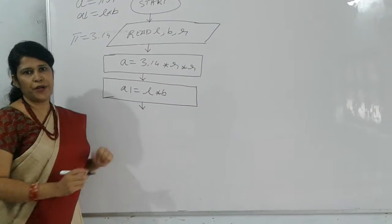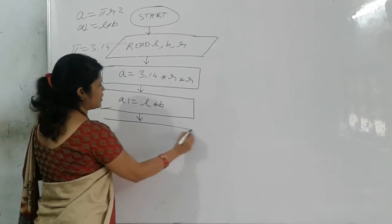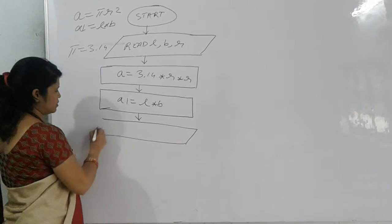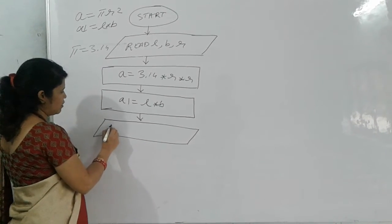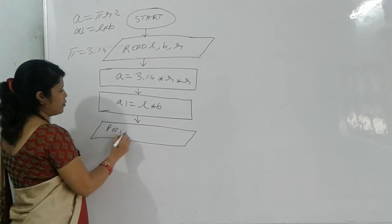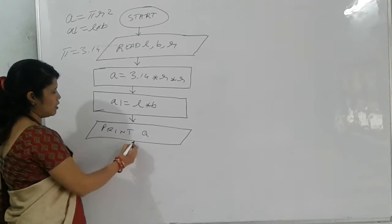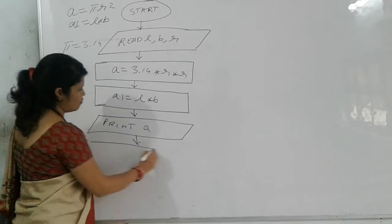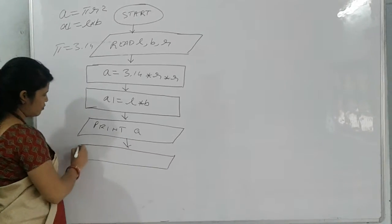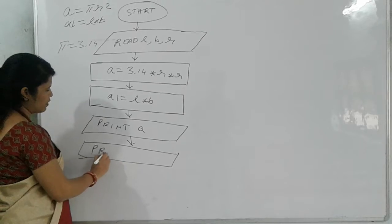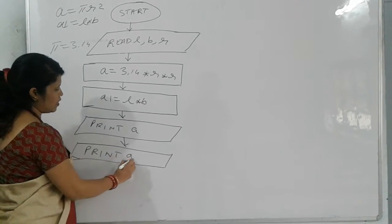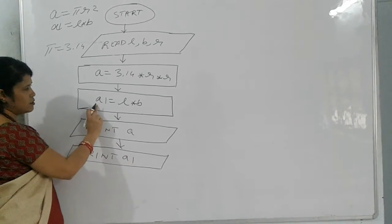Now after this, after calculating we have to print it. So we will print it in input and output box, that is parallelogram. We write print a which is area of a circle. One more box for printing area of a rectangle. We will write print a1 which is stored in this.